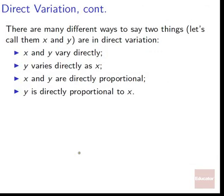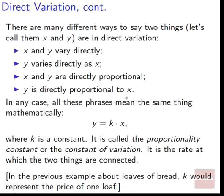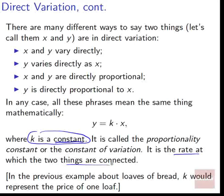There are lots of different ways to say that two things, x and y, are in direct variation. We could say x and y are in direct variation, x and y vary directly, y varies directly as x, x and y are directly proportional, or y is directly proportional to x. They all mean the exact same thing mathematically: y equals k times x, where k is a constant. It's called the proportionality constant or the constant of variation — the rate at which the two things are connected. In the bread example, k would represent the price of one loaf, which is what connects the number of loaves to the total cost.